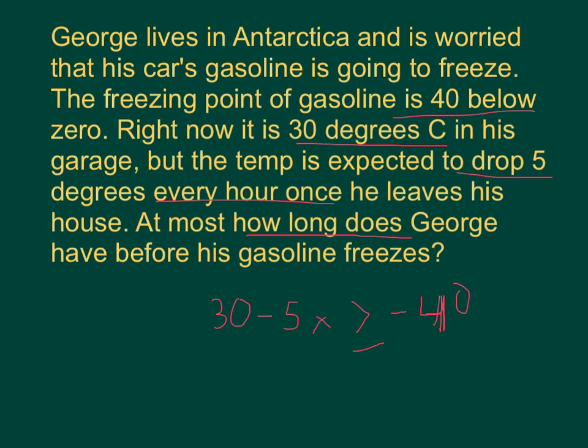So, again, what this is saying is, it's starting out at 30, right? We need it to be greater than or equal to negative 40, and every hour, it's going to drop 5 degrees. So, after the first hour, it's going to be 25 degrees. After the second hour, if this was a 2, it would be 2 times 5 is 10. It's going to be 20 degrees, and so on.